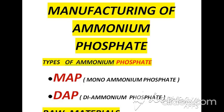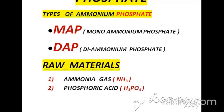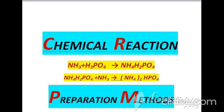Today I am presenting a lecture on the industrial manufacturing process of the well-known fertilizer ammonium phosphate. We will start from the types of ammonium phosphate. There are two types: the first is mono ammonium phosphate and the second is diammonium phosphate. The raw materials used are ammonia gas and phosphoric acid. In the first reaction, ammonia gas and phosphoric acid react to form mono ammonium phosphate, and in the second stage, ammonia gas reacts with mono ammonium phosphate to produce diammonium phosphate.